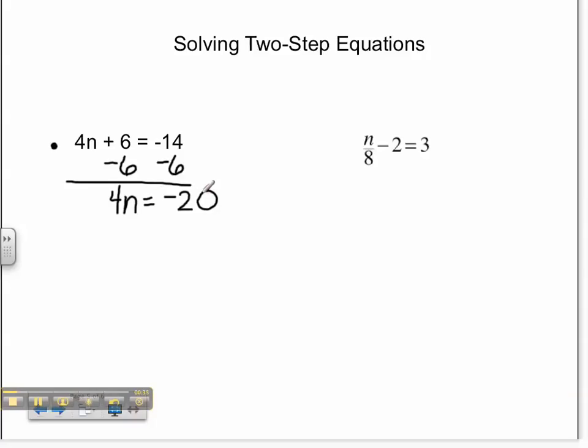We're then left with a one-step multiplication problem. In order to undo our multiplication, we must divide both sides by 4. 4n divided by 4 equals n. Negative 20 divided by 4 is negative 5.